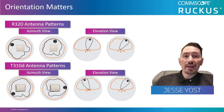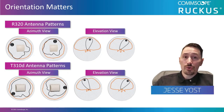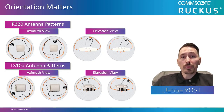Moving on to the elevation view, you can see that the orange line pattern here is quite different. When we overlay the AP image in this view, we can quickly see that this is a side view of the radio coverage.